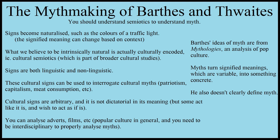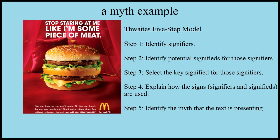Thwaites basically took the ideas that Barthes was speaking about and made them into a five-point system that would be more easily understood. In this particular case, I'm going to be looking at a particular example of myth expressed within a McDonald's advert. It's quite a famous and often mocked McDonald's advert, but it's a very good one for identifying the myth of meat consumption and its connections to misogyny.